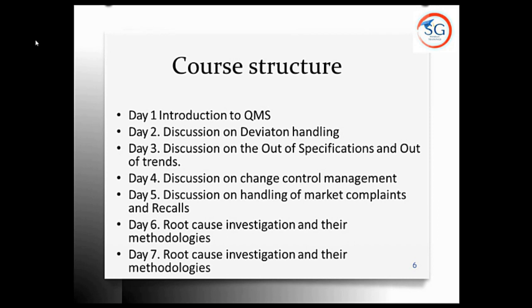A planned deviation is when, before performing a particular task, you already know you want to deviate from the procedure — in that case you raise a planned deviation. An unplanned deviation is when the procedure has already started and you realize it won't produce a correct output. Since the procedure already started, it comes under unplanned deviation. An unplanned deviation may occur intentionally or unintentionally, and is also called an incident.